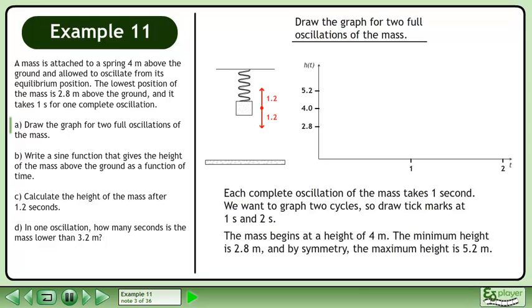The mass begins at a height of 4 meters. The minimum height is 2.8 meters and by symmetry, the maximum height is 5.2 meters.